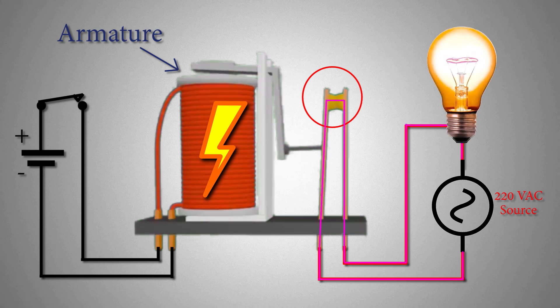As the contact closes, it completes the AC circuit and the voltage gets applied to the bulb and the bulb lights up.